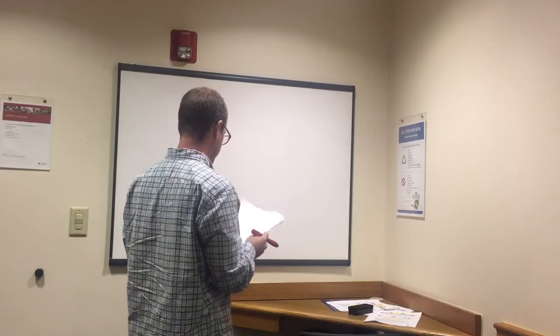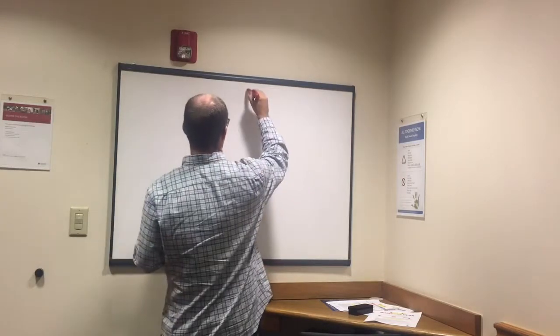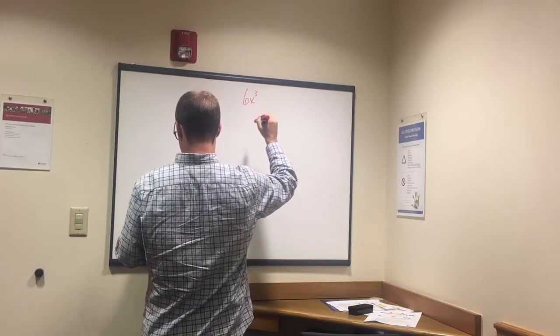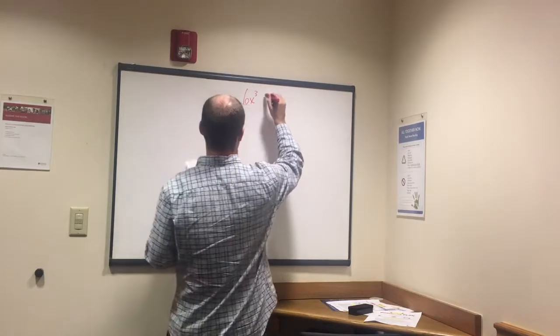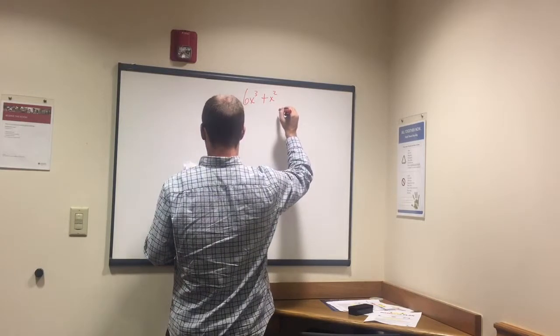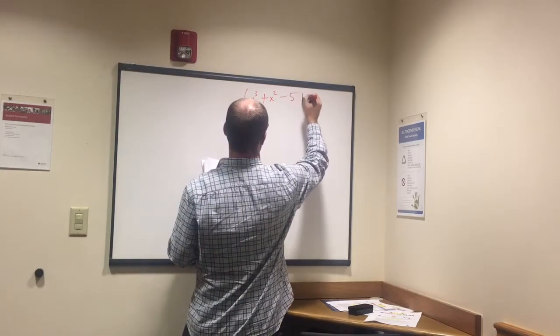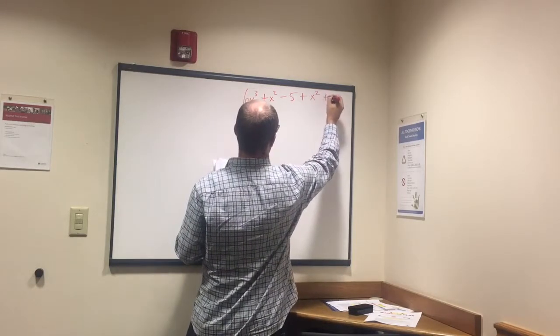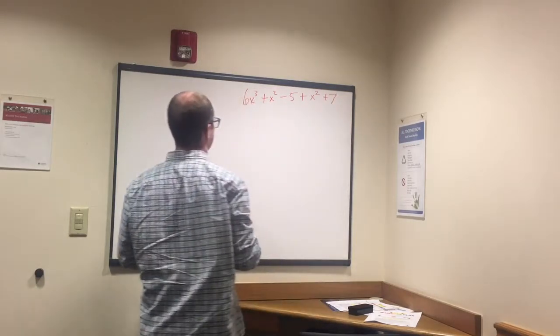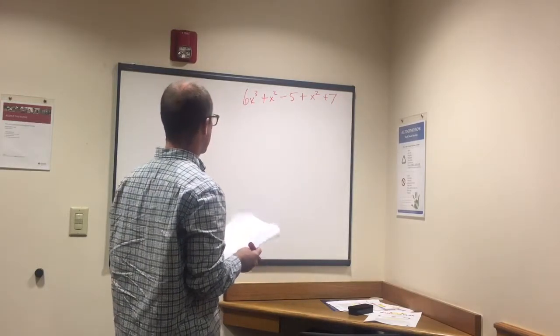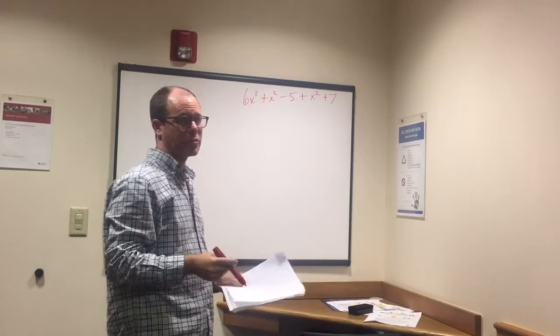Now we get to stuff where we have to simplify. This is a little bit harder. So we got 6x to the third plus x squared minus 5 plus x squared again plus 7.